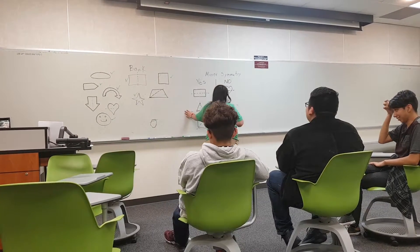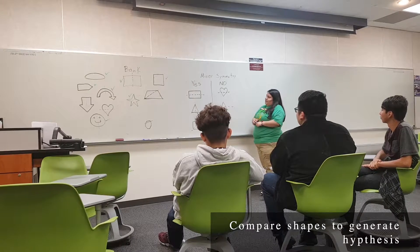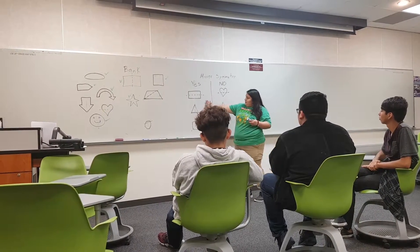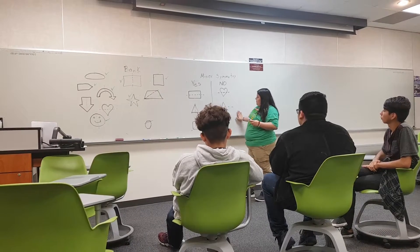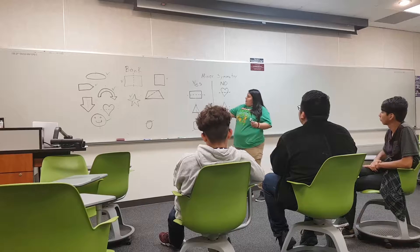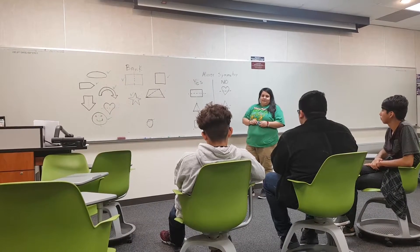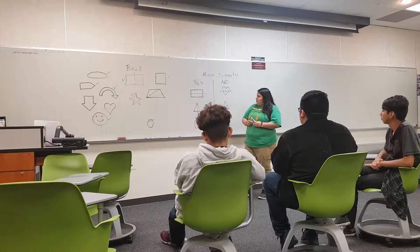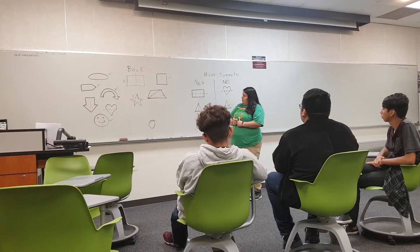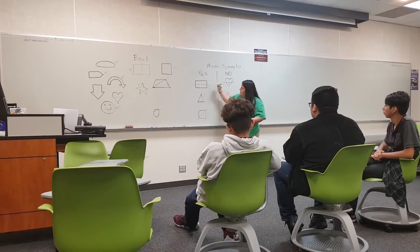Now let's play a game. I have two columns and this is a guessing game. You're going to guess why these shapes are in here and why these shapes are in here. Why do you think the shape is in the yes column? Because it has a twin. Which one is twin one and which one is twin two? The top one and the bottom. It's a twin.